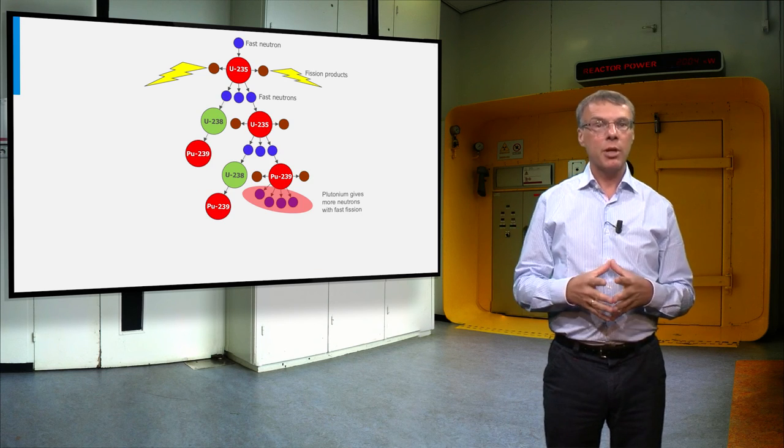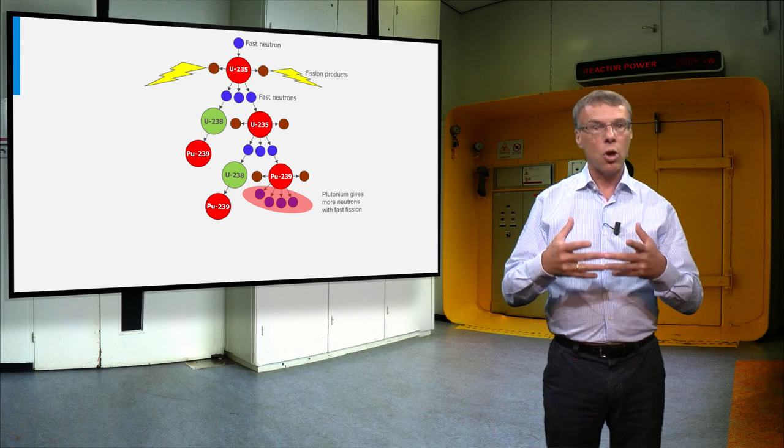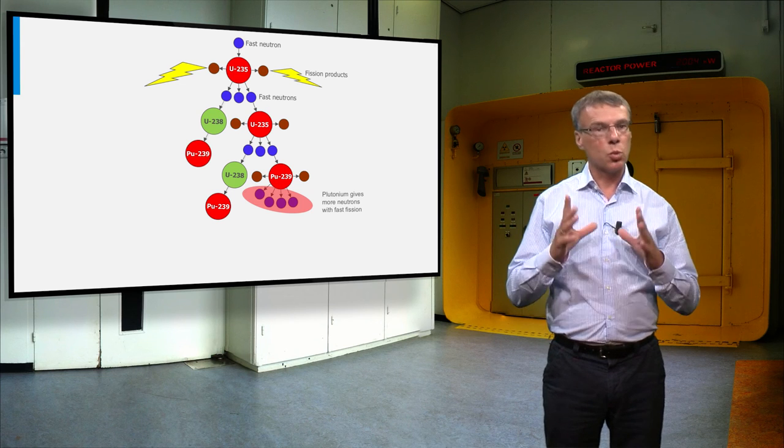Here we see the scheme for the fission chain reaction for a reactor fueled with uranium-235 and own-bred plutonium-239. I want to emphasize one important thing.